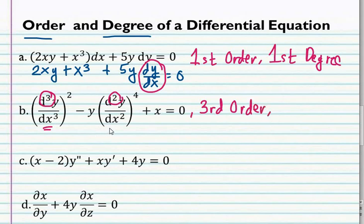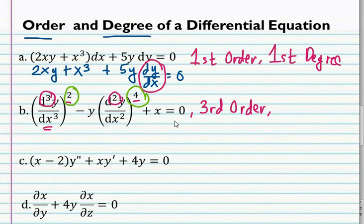How about the degree? We can see here that the exponent on the third derivative is 2 and on the second derivative is 4. We will not follow 4 because the order at which it appears is only the second order. So we will follow 2 as its degree — third order and at the same time, second degree.